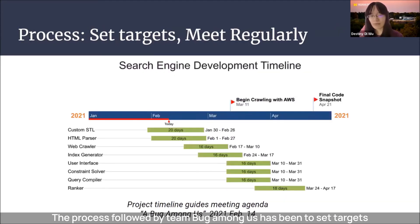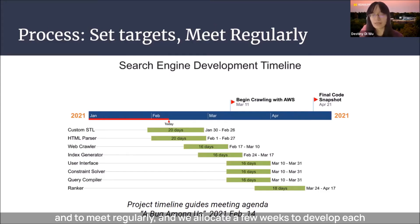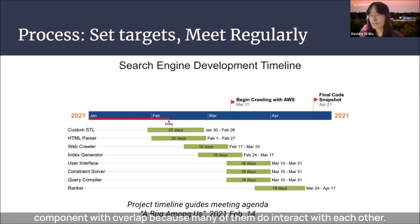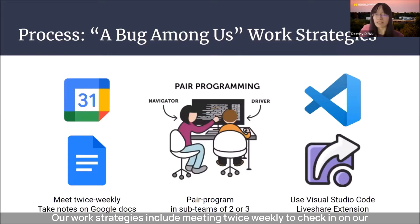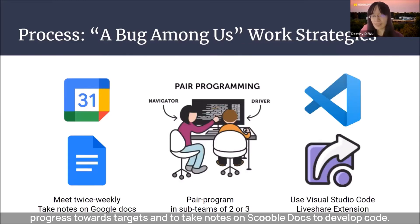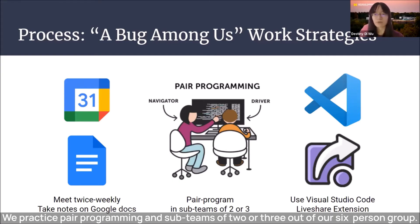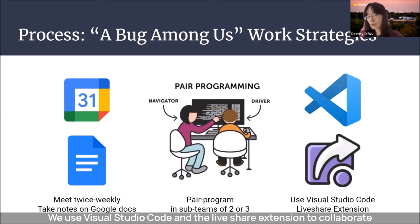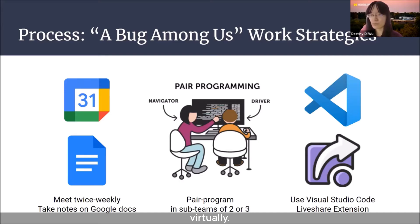The process followed by team A Bug Among Us has been to set targets and to meet regularly, allocating a few weeks to develop each component with overlap because many of them interact with each other. Our work strategies include meeting twice weekly to check in on progress and take notes on Google Docs. To develop code, we practice pair programming in subteams of two or three out of our six-person group, using Visual Studio Code and the LiveShare extension to collaborate virtually.